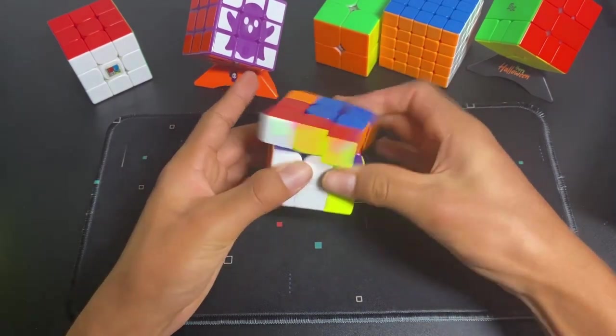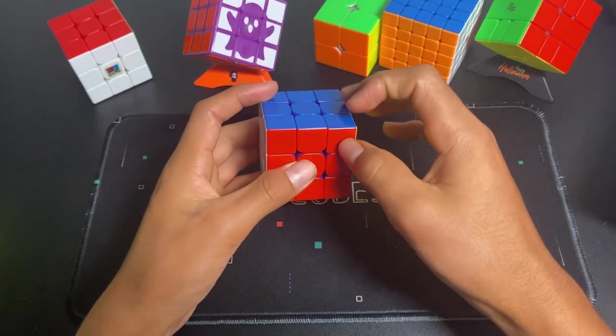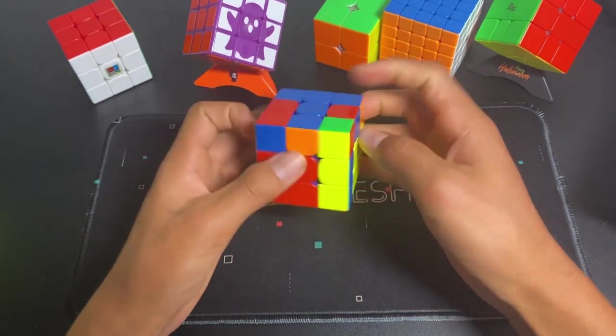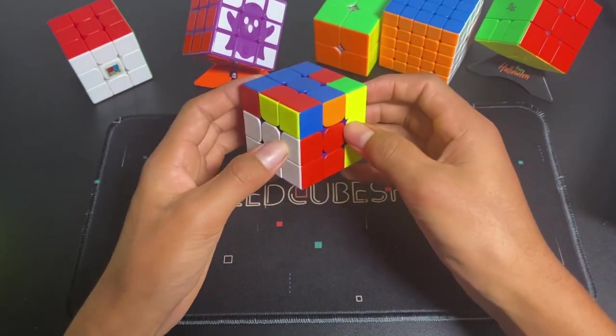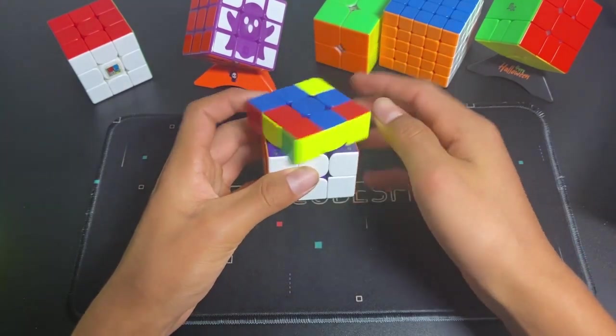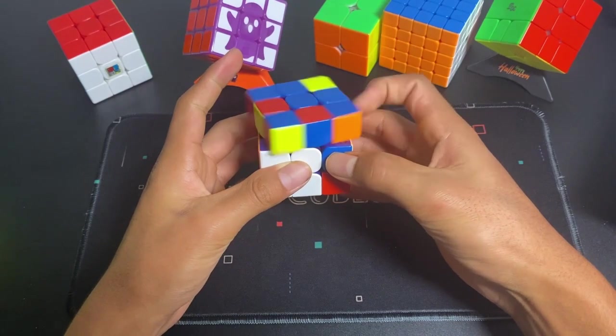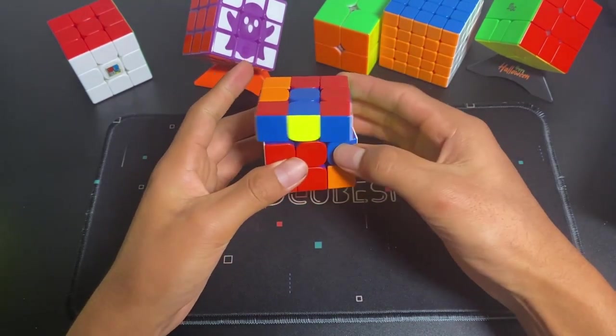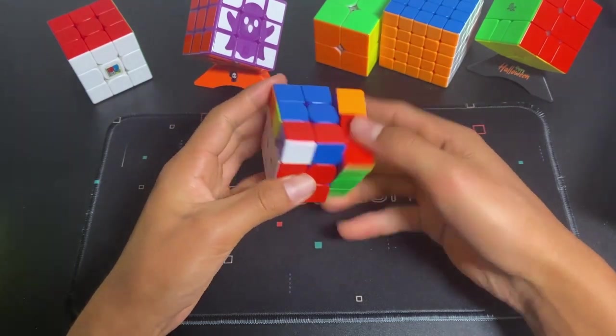You want to have a built-in algorithm in your muscle memory to solve every single one of the cases. So in this case, you wouldn't want to take the corner out, hide the corner, remove the edge,